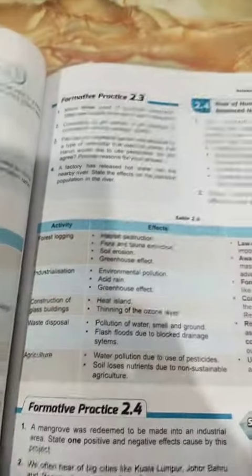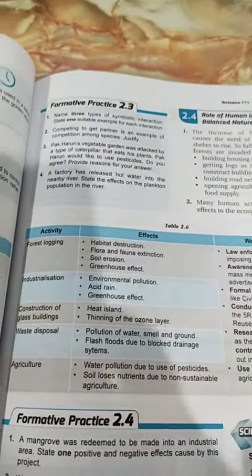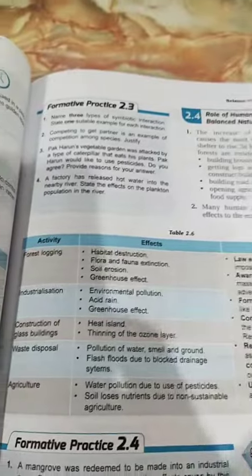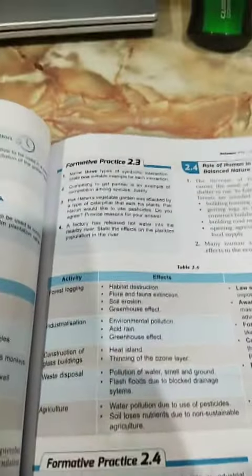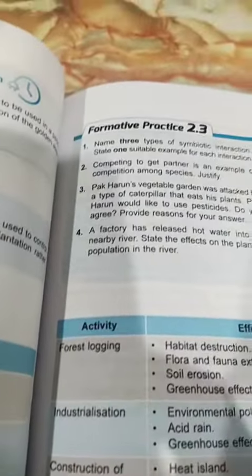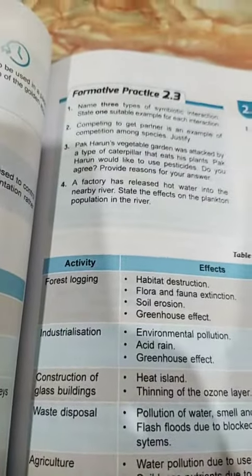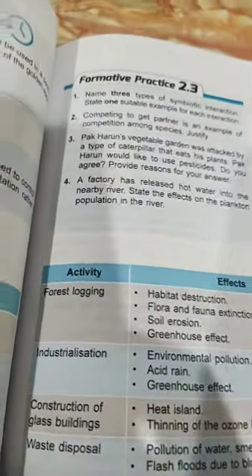Okay, now I'm back from Part 9, Chapter 2, Science at Form 2. Now that's the Part 9 for real. The Activity, the Effects, and the Ways to Overcome — Forest Logging.